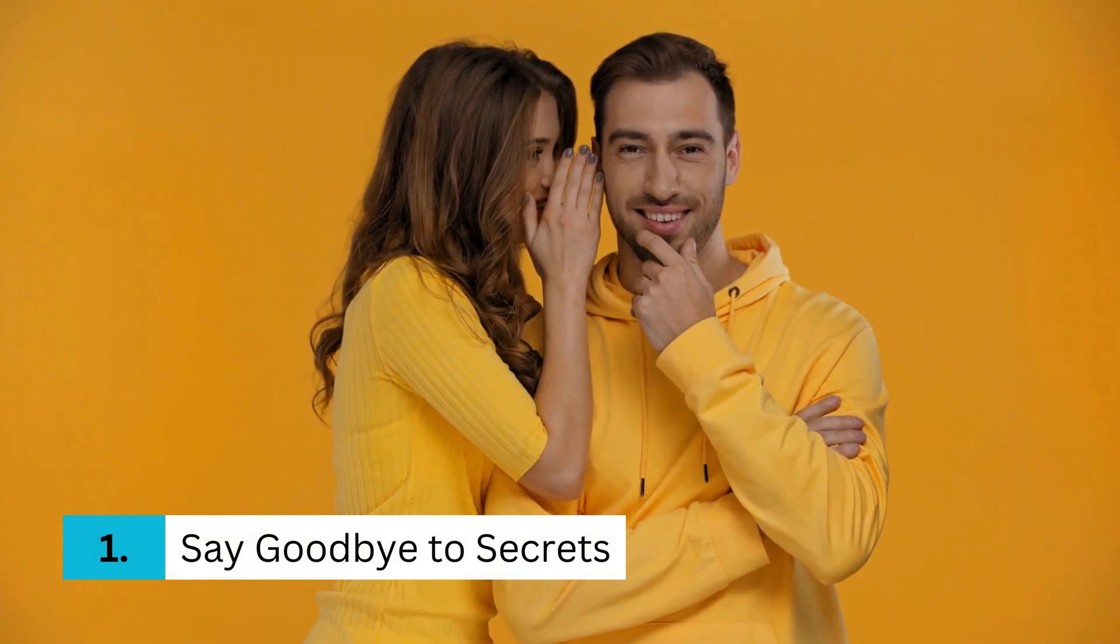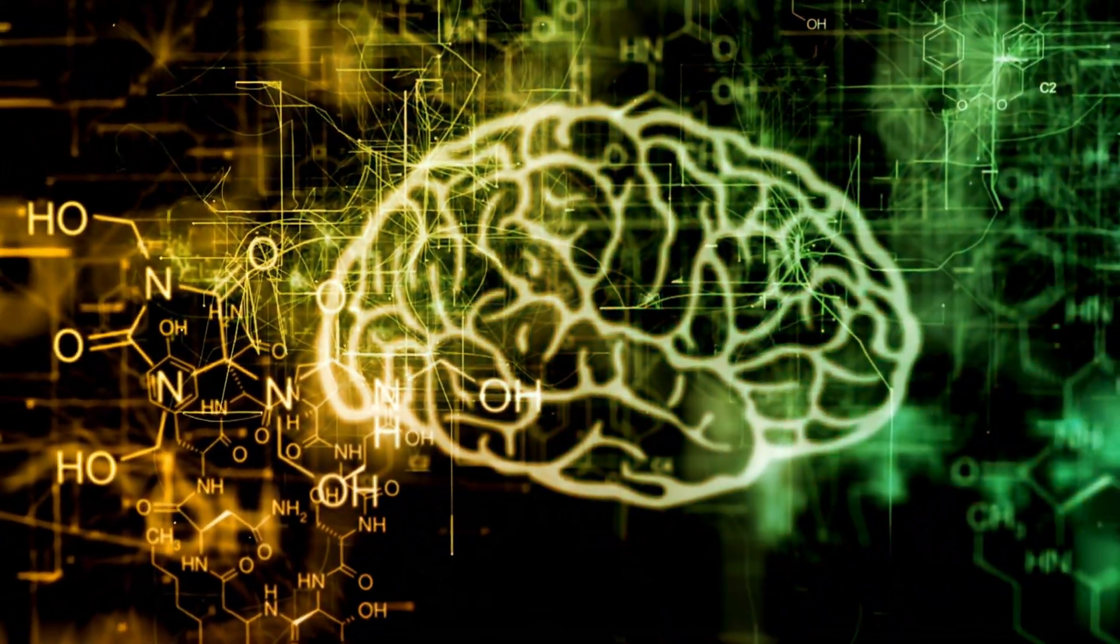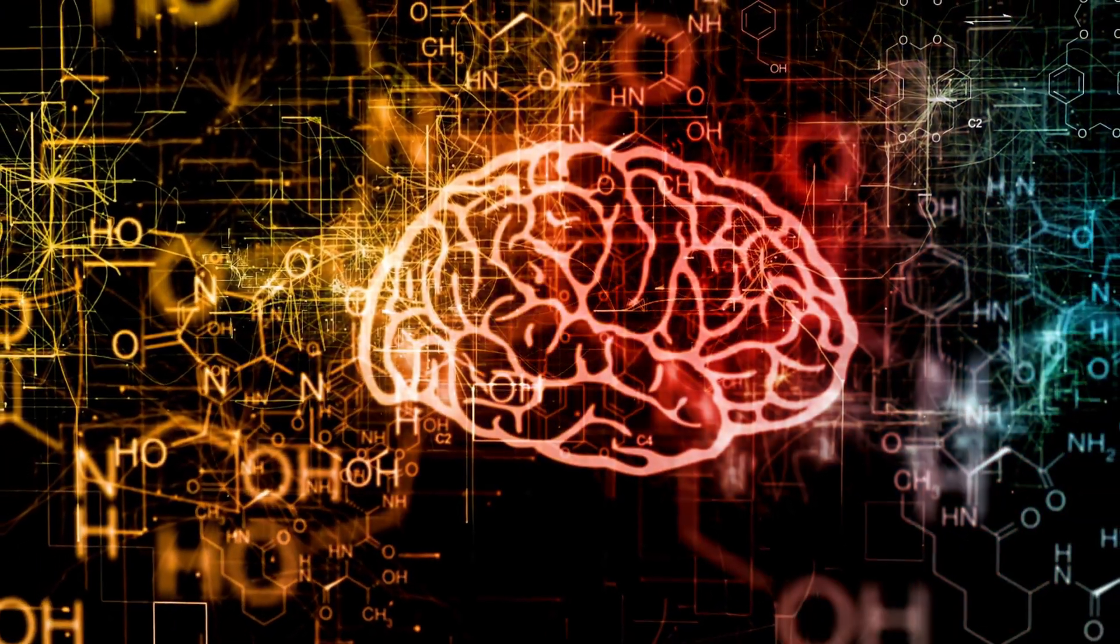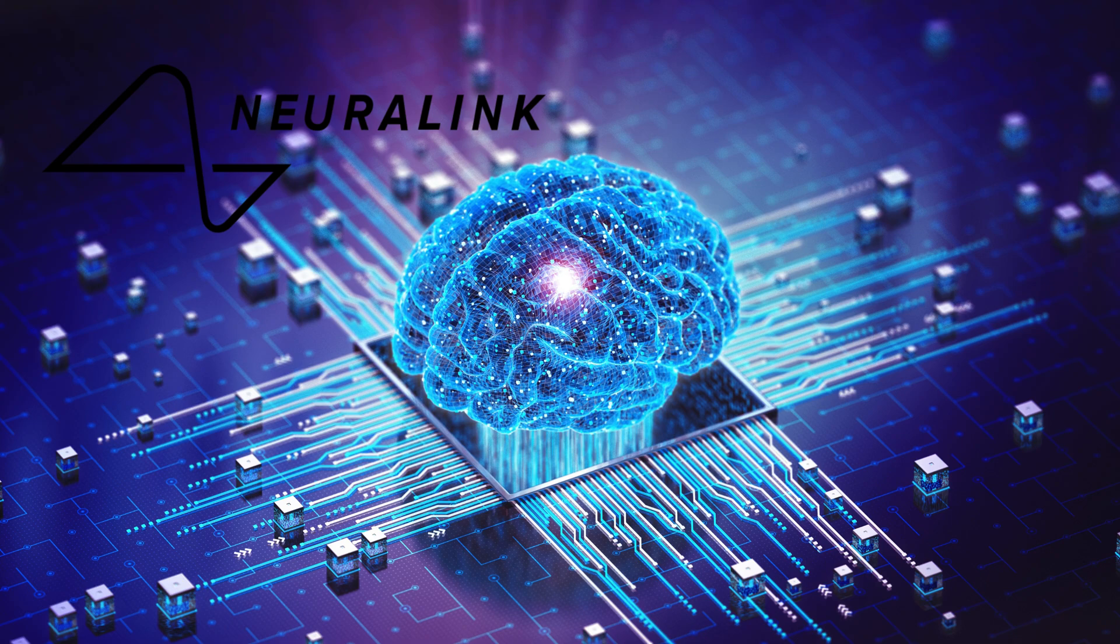Number 1. Say goodbye to secrets. First off, think about someone else being able to peek into your thoughts. Not just any thoughts. Your secret, personal ones. Neuralink could mean our brains aren't just ours anymore. Feeling exposed yet?